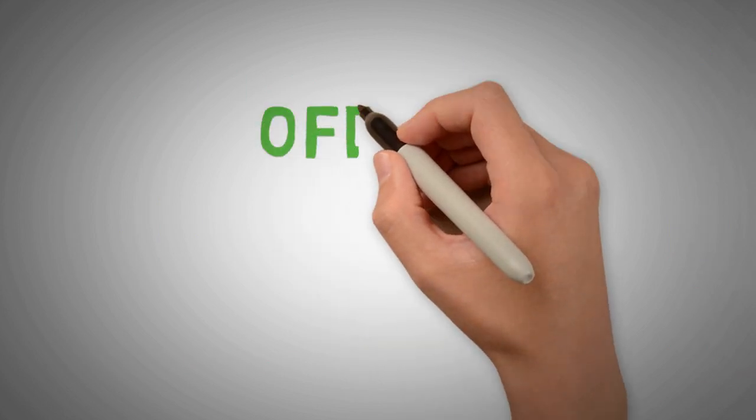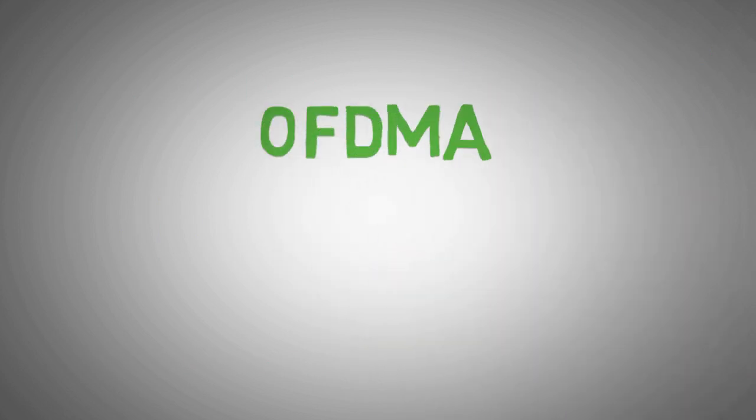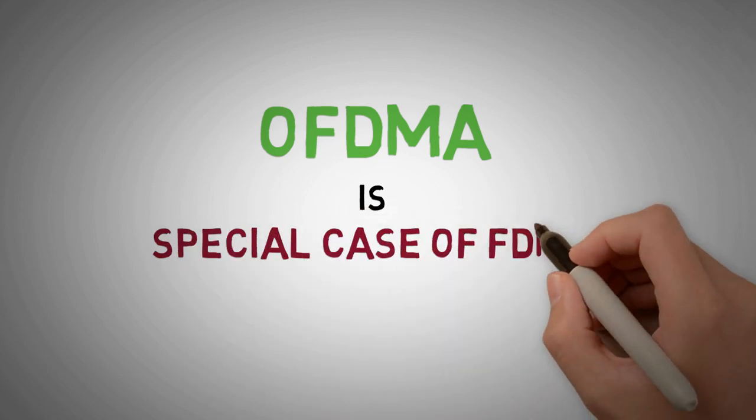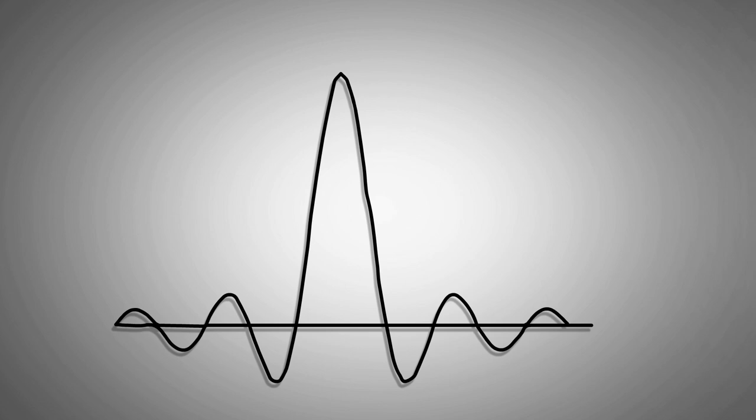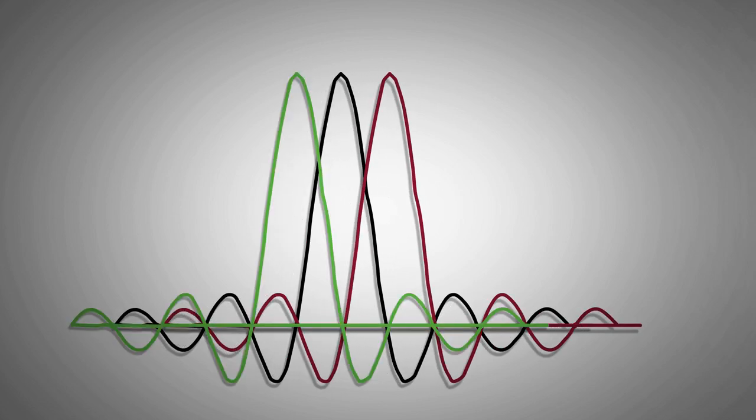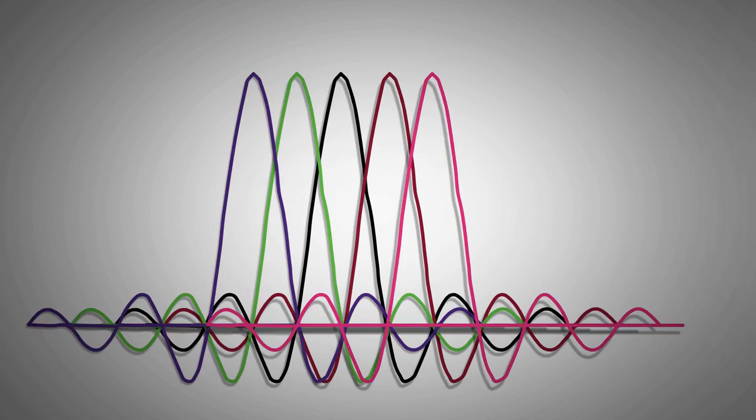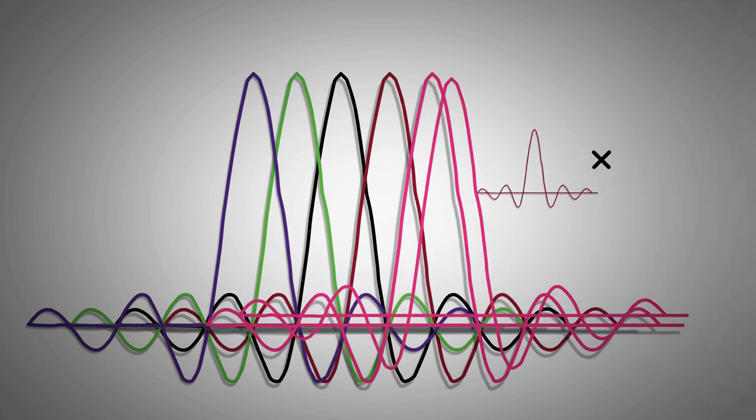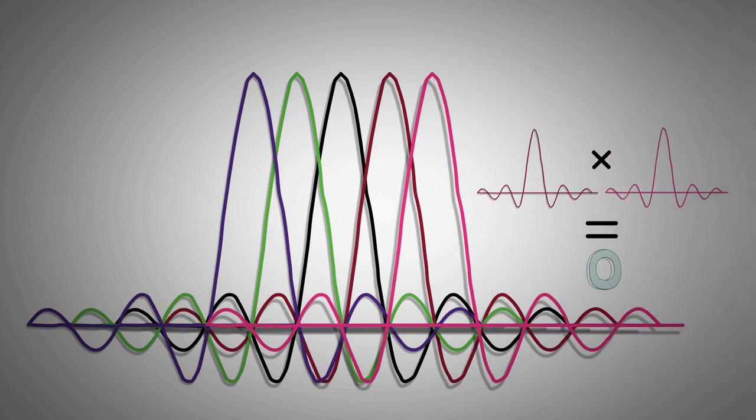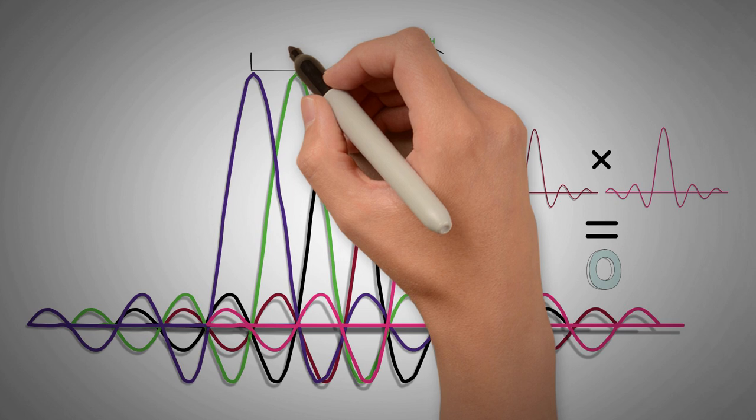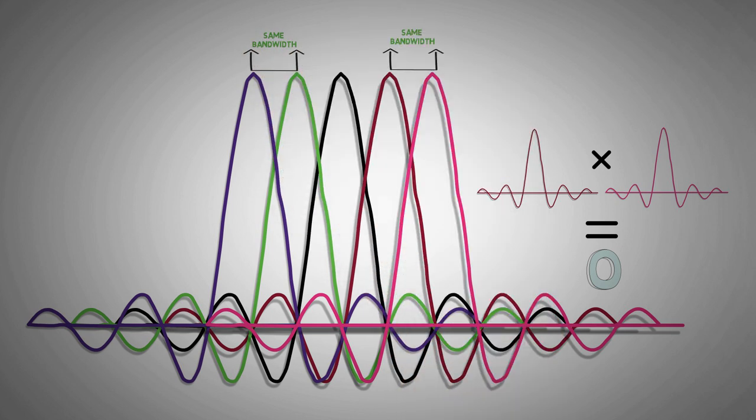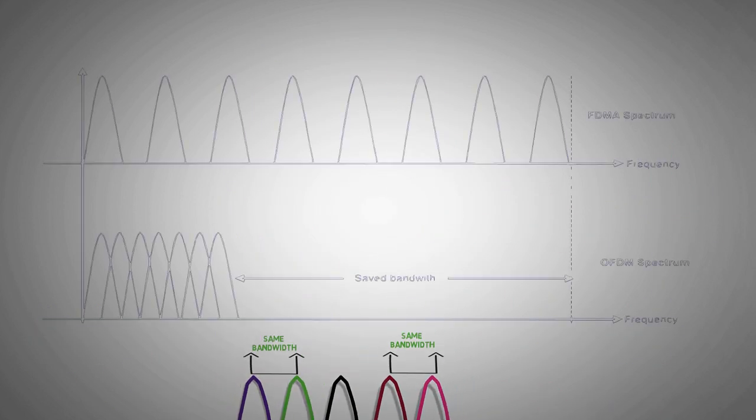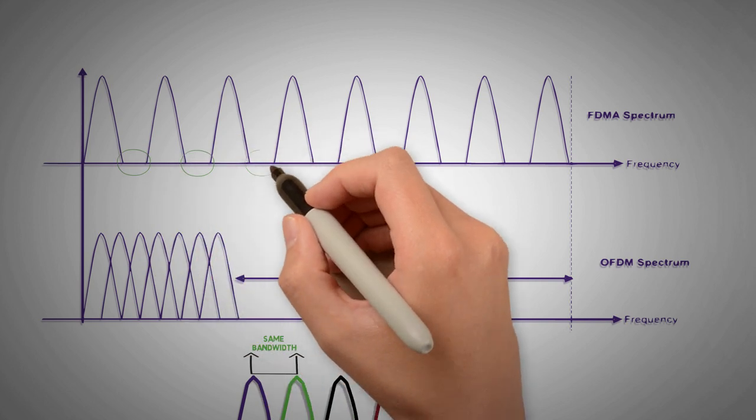OFDMA or orthogonal frequency division multiple access is a special case of FDMA, where users are provided a set of sub-carriers overlapping in frequency domain. However, these sub-carriers are specially designed to be orthogonal to each other, which allows them to occupy the same bandwidth without any interference. This in turn negates the use of guard bands.